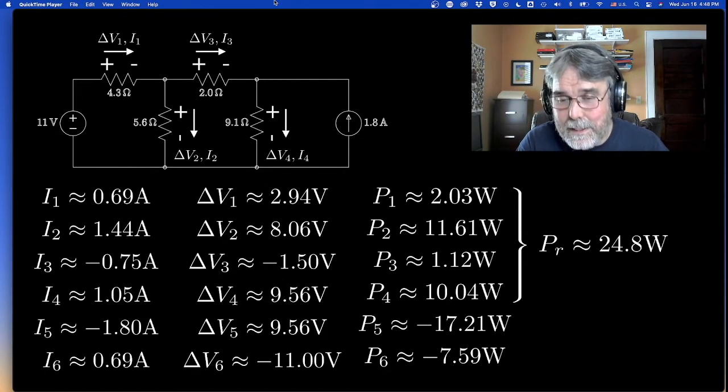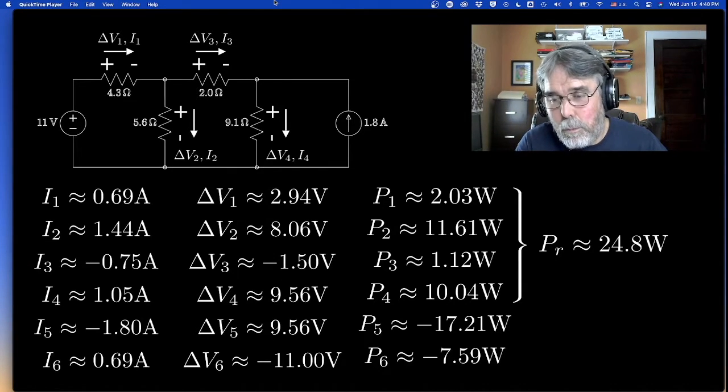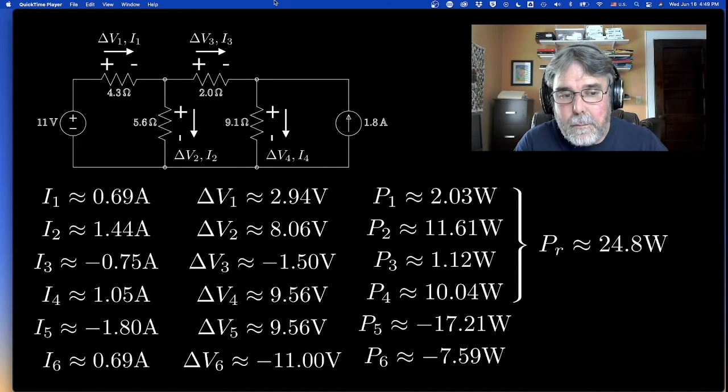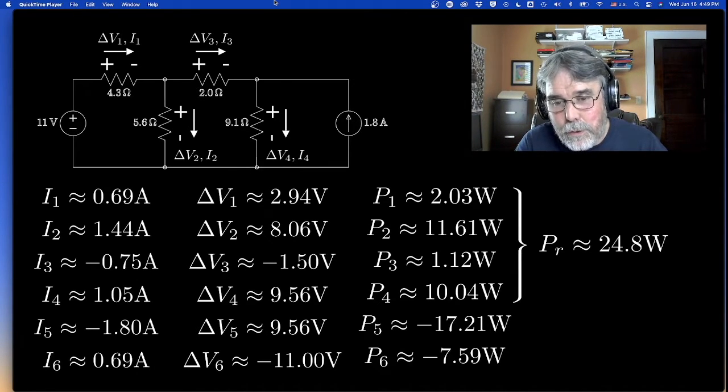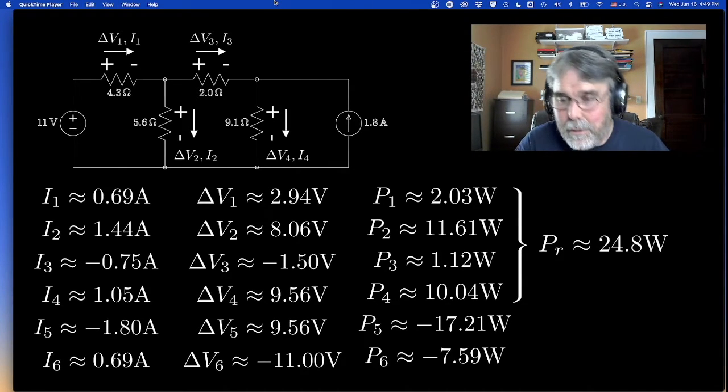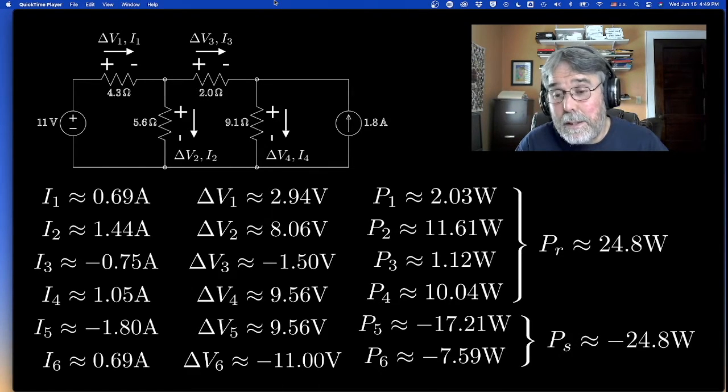Now I neglected to say if you add up the power dissipated by each of those resistors, you get 24.8 watts. The power introduced into the circuit from the two sources are 17.21 watts for the current source, 7.59 watts for the voltage source. If you add those guys together, then you round to one decimal place basically, you also get 24.8 watts. But in this case, it's negative.